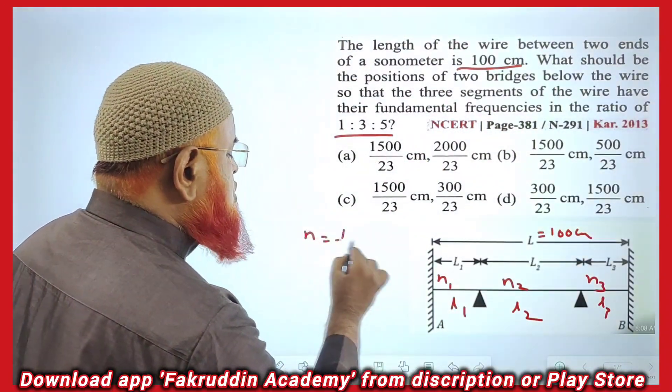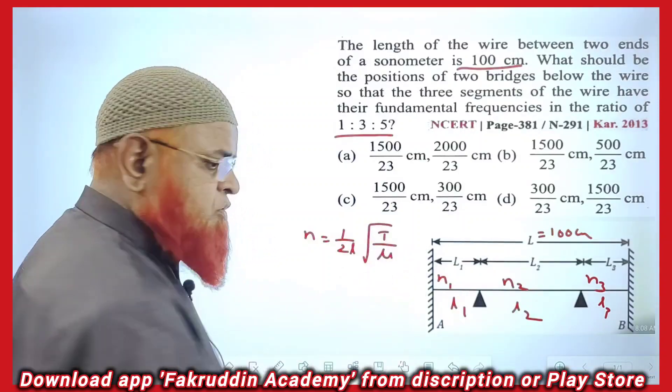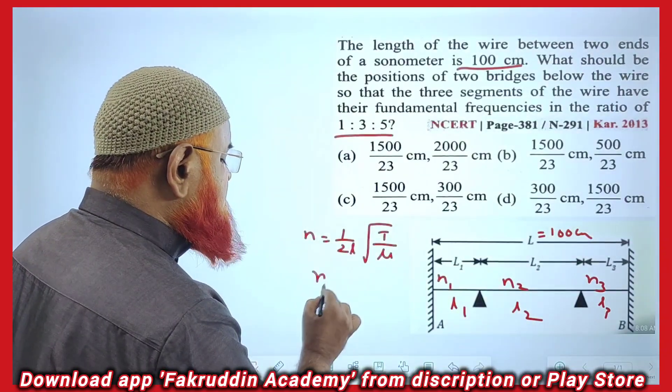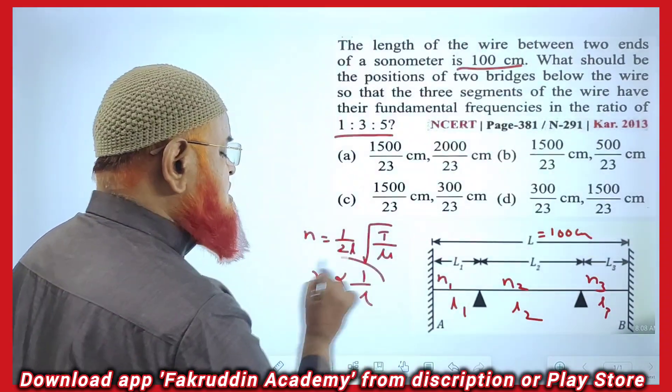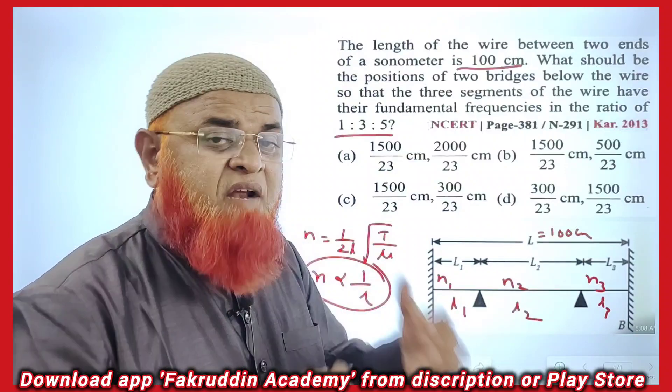You know there is one formula: N = 1/(2L)√(φ/μ). With this formula, it is understood that frequency is inversely proportional to length. If frequency ratios are given, you can find out the length ratios.